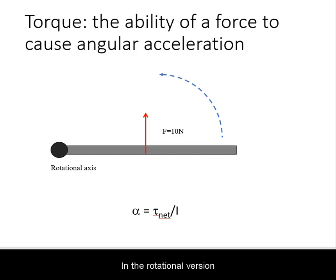In the rotational version of Newton's second law, angular acceleration is directly proportional to the net torque acting on an object and inversely proportional to its moment of inertia.